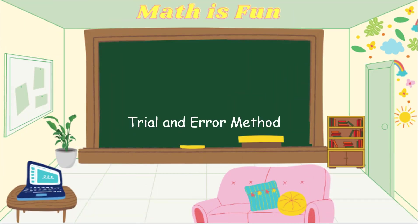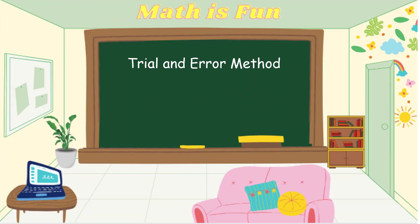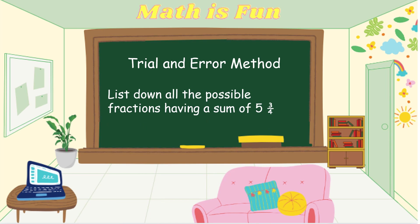To answer our problem, we can use the trial and error method: list down all possible fractions having a sum of 5 and 3 fourths, then subtract them. If their difference equals 1 and 1 half, those fractions are the answer. However, this takes time because there are many possible fractions.